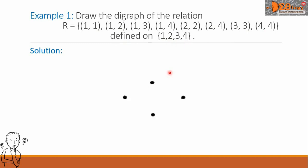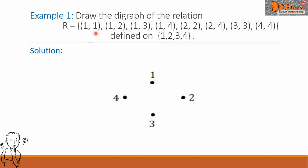For our solution, let us draw 4 points and assign the elements of the set to each. We write this point as 1, this as point 2, point 3, and point 4. Let us draw the digraph starting with the first ordered pair (1,1) — we draw an arrow from point 1 going to point 1, which will be a loop.